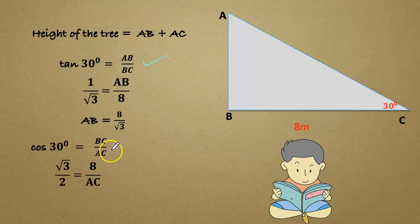The value of cos 30 is root 3 by 2. Root 3 by 2 equals 8 divided by AC. Cross multiplying, we get root 3 into AC equals 2 into 8, 16. Therefore AC equals 16 divided by root 3.